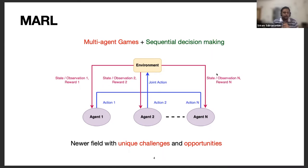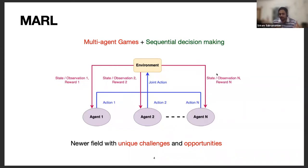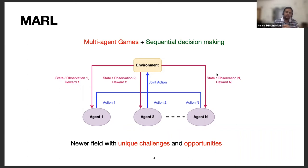Multi-agent reinforcement learning can be described as follows: we have N agents, where N is greater than or equal to two. Each agent obtains a state or observation from the environment, chooses an action, and the joint action of all agents informs the reward function of each agent. When this joint action is executed, the entire system sequentially transitions to a new state, and this process keeps continuing. Multi-agent RL has to be seen as its own unique field with its own unique challenges and opportunities, different from its constituent areas of multi-agent games and sequential decision making.